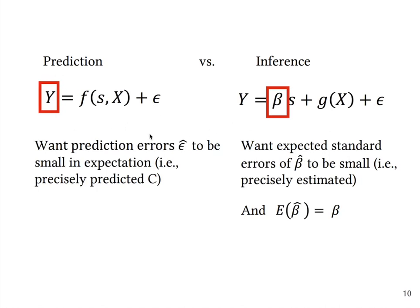Also in prediction tasks we want our prediction errors epsilon hat to be as small as possible in expectation. In other words we want to precisely predict Y as much as possible.